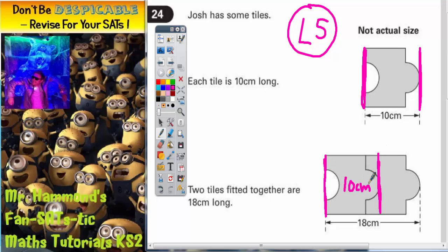...but this total distance here is 18 centimeters, where this tile stops to the end of the second tile, that must be a gap of 8 centimeters, because the 10 that we know from this diagram plus the 8 here makes 18. 10 plus 8 makes 18.